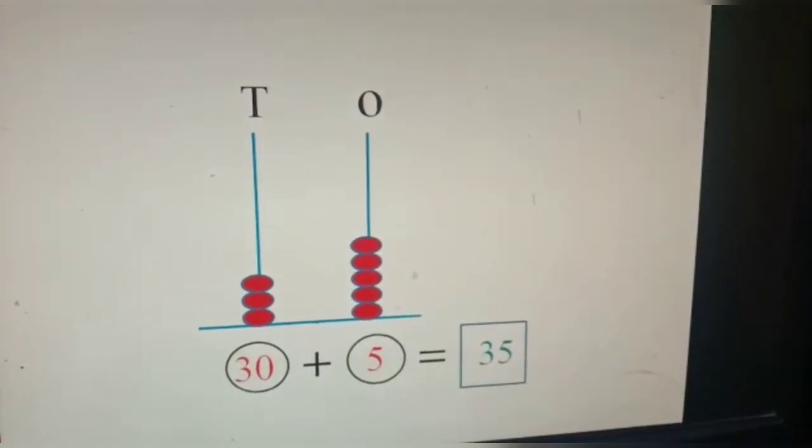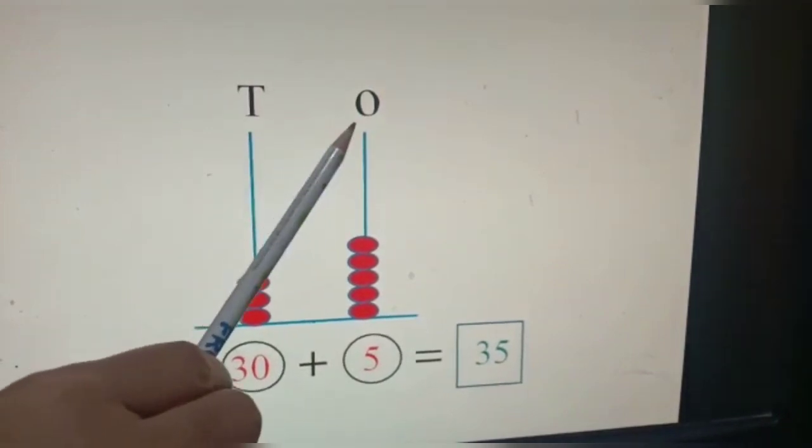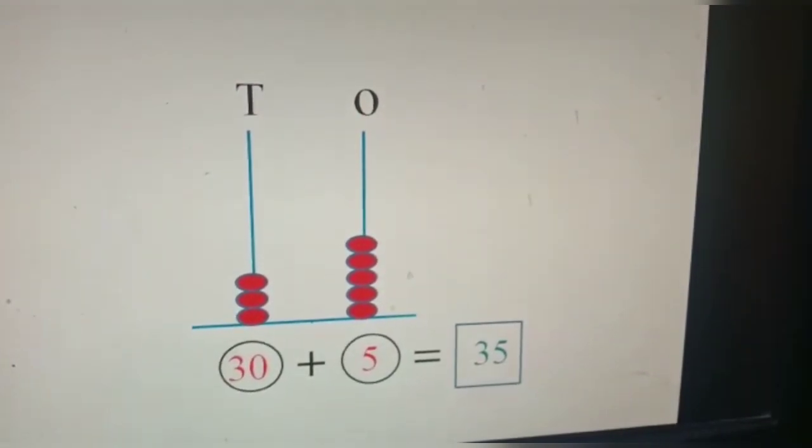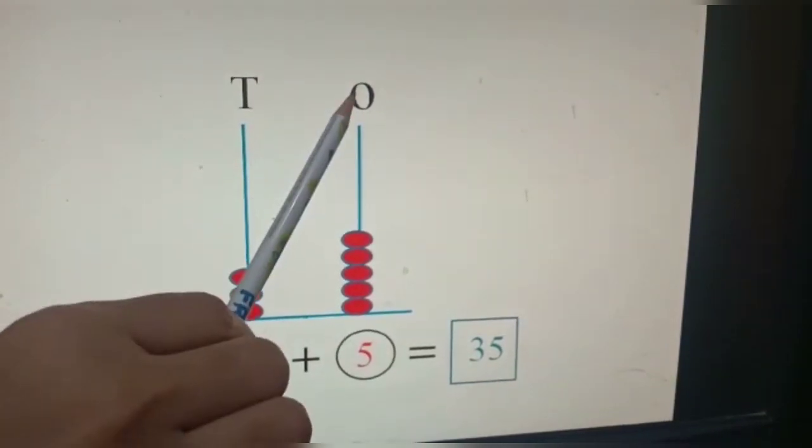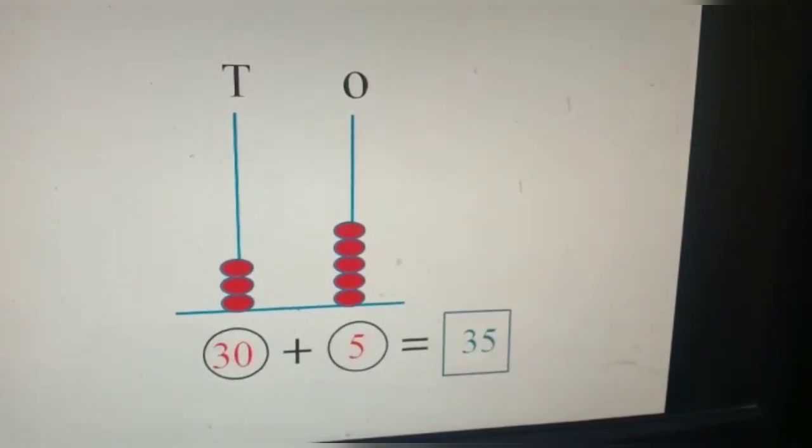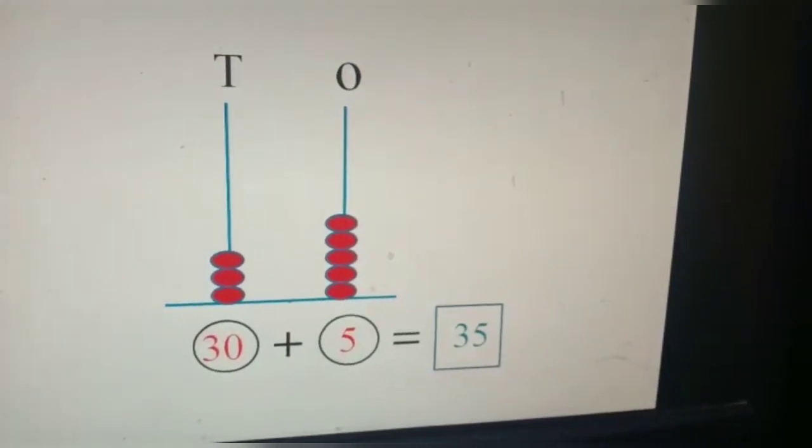Here we have the first sum. Here is an abacus and in an abacus, O stands for ones and T stands for tens. Children, you all know, ones is always written on your right hand side, and tens is written to the left of ones.